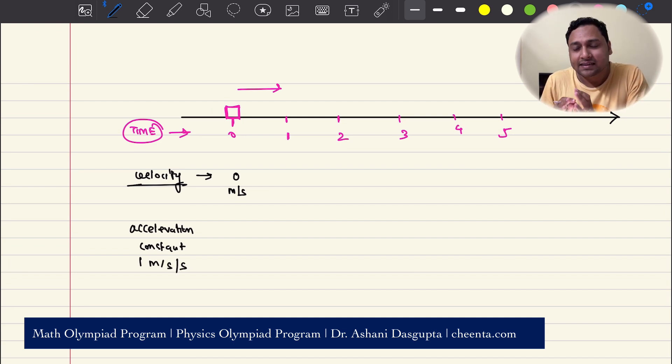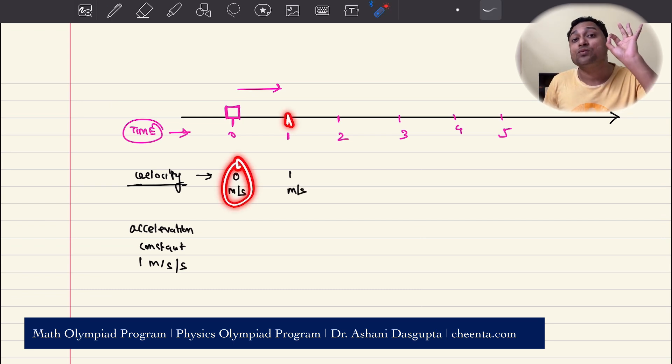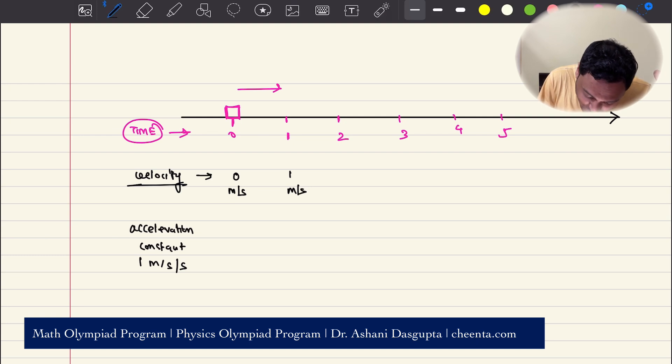It's also given that the acceleration is constant and it is 1 meter per second per second. This means the velocity increases by 1 meter per second every second. At the end of the first second, the velocity is 1 meter per second. At the end of 2 seconds, it's 2 meters per second. At the end of 3 seconds, it's 3 meters per second.